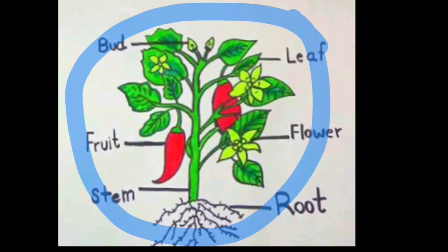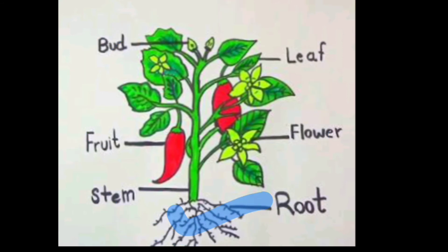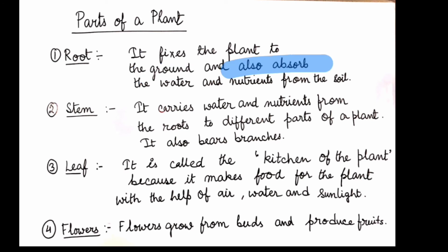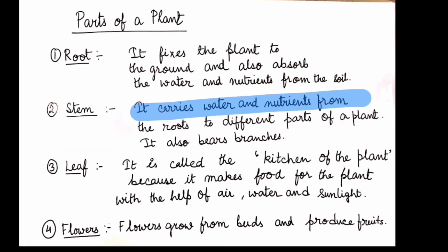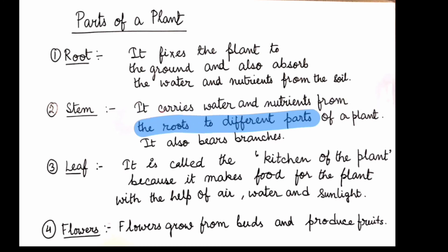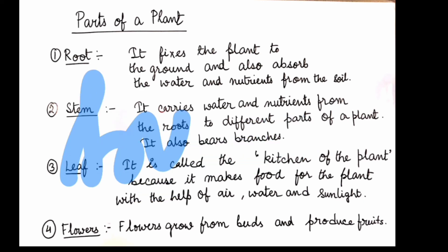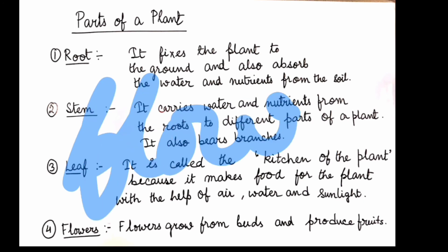Now we'll study about the different parts of a plant. The parts are: root, stem, leaf, flower, fruit, and bud. Roots are the part of the plant which remain underground. Roots fix the plant to the ground and also absorb water and nutrients from the soil. The stem carries water and nutrients from the roots to different parts of the plant and also bears the branches.